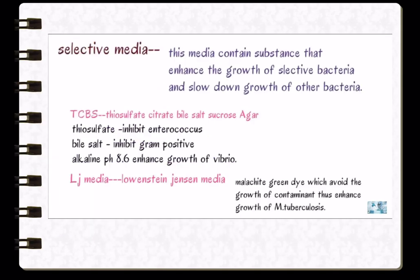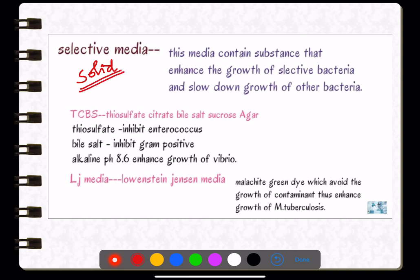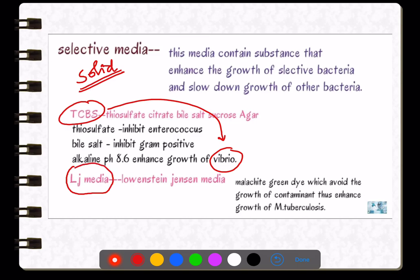The third type is selective media — solid in nature. Enrichment media is also selective but liquid. Examples: TCBS (thiosulphate citrate bile salt sucrose agar) for Vibrio, and Loewenstein-Jensen (LJ) medium for Mycobacterium tuberculosis. In selective media, a substance is added to inhibit growth of unwanted bacteria — in LJ medium, malachite green dye inhibits other bacteria and enhances growth of Mycobacterium tuberculosis.